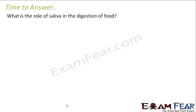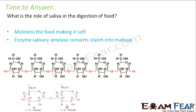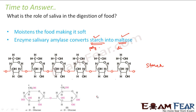What is the role of saliva in the digestion of food? Saliva is the watery fluid present in our mouth. First, it moistens the food, making it softer and easier to chew. Second, it contains an enzyme called salivary amylase which converts starch into maltose. Starch is a polysaccharide — many glucose molecules joined together — whereas maltose is a disaccharide made of two glucose molecules. So salivary amylase converts this complex molecule into a far simpler one.